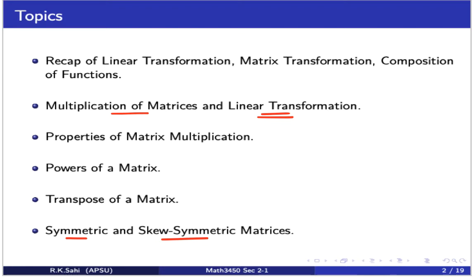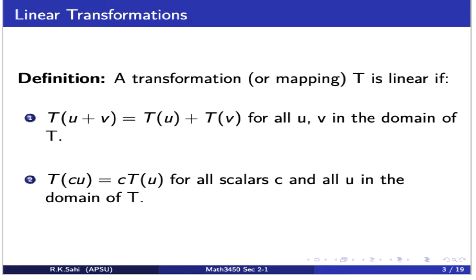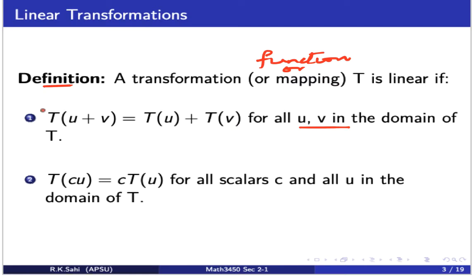Let's begin with linear transformations. Remember, when we say the word transformation it's the same as saying a mapping or a function. A transformation T is linear if T, when it acts on the sum of two elements u and v in the domain of T, is the same as T acting on u added to T acting on v. So what this simply says is that the linear transformation preserves vector addition.